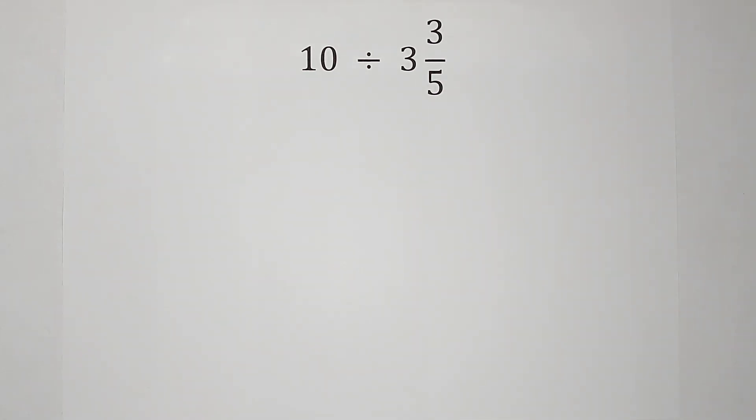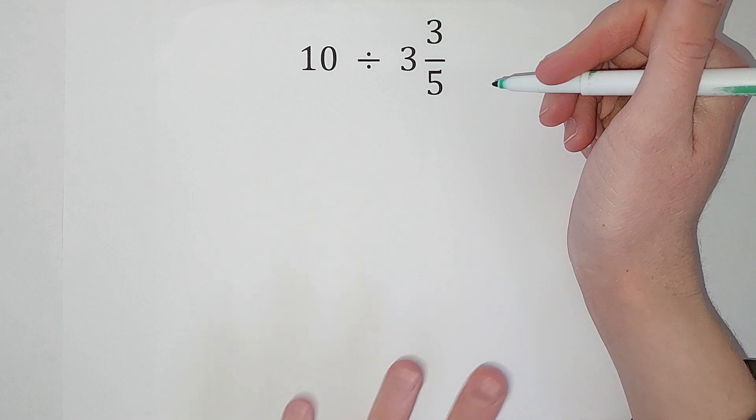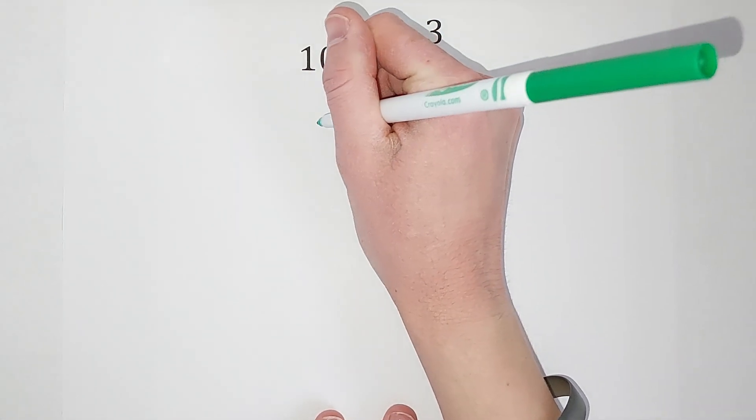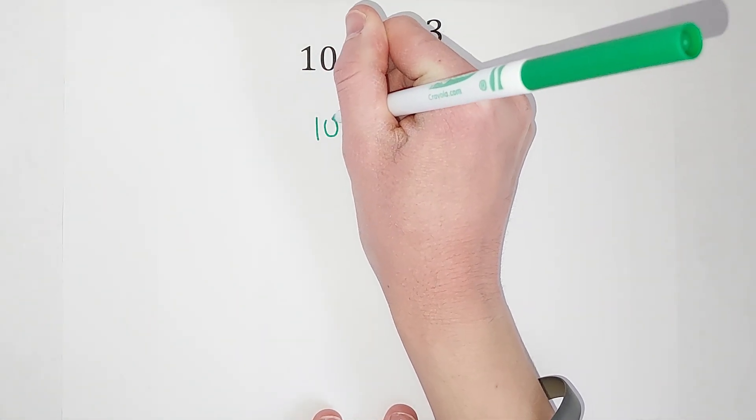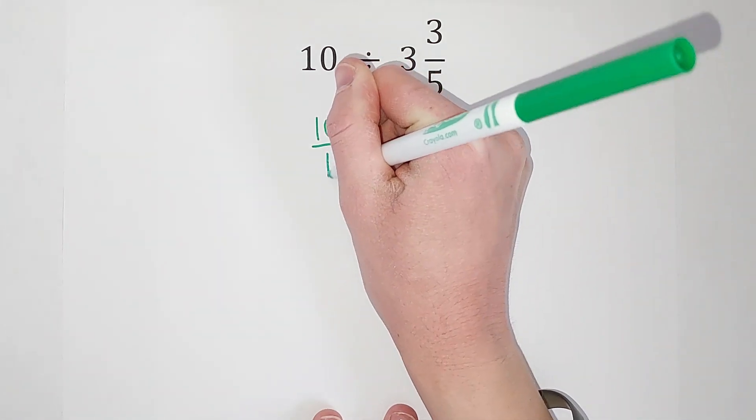Before I do this, there are two things I want to do. I want to make 10 look like a fraction. It doesn't look like one right now. To do that, all I have to do is put it over a 1. So I've got 10/1, so now it looks like a fraction.